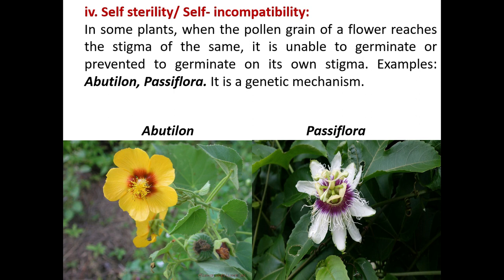Self-sterility or self-incompatibility: in some plants, when the pollen grain of a flower reaches the stigma of the same flower, it is unable to germinate or is prevented from germinating on its own stigma. This is a genetic mechanism. The inability of a pollen grain to germinate on the stigma of its own flower is called self-sterility or self-incompatibility. For example, Abutilon passiflorae.